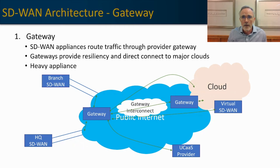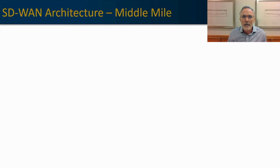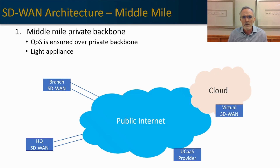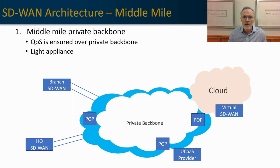Now let's take a look at the last SD-WAN approach: the middle-mile architecture. In this architecture, you have an expansive private backbone connecting multiple POPs, and quality of service is assured over that private backbone. Generally you'll have a light appliance — providing encryption and possibly site-to-site VPN capabilities if traffic doesn't need to go through a POP. Those POPs are generally located in the major data centers within major metropolitan areas.